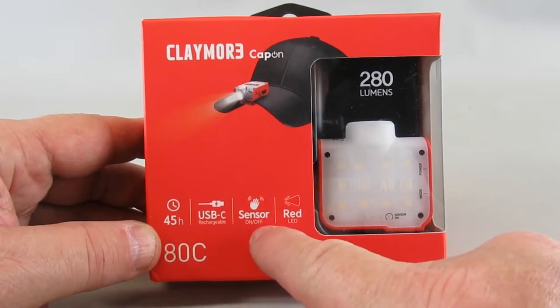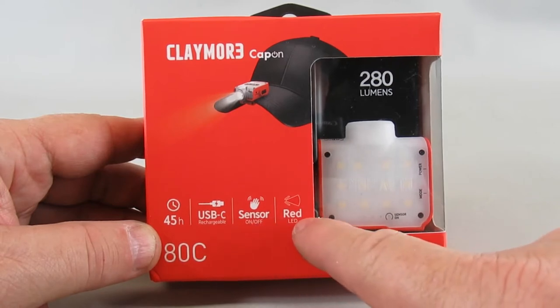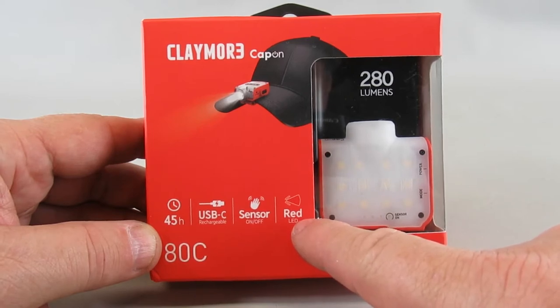You can wave your hand on the side to turn it on and off, which is helpful when carrying things. One feature I like is the red LED, which you can dial down to very low intensity for astronomy use.